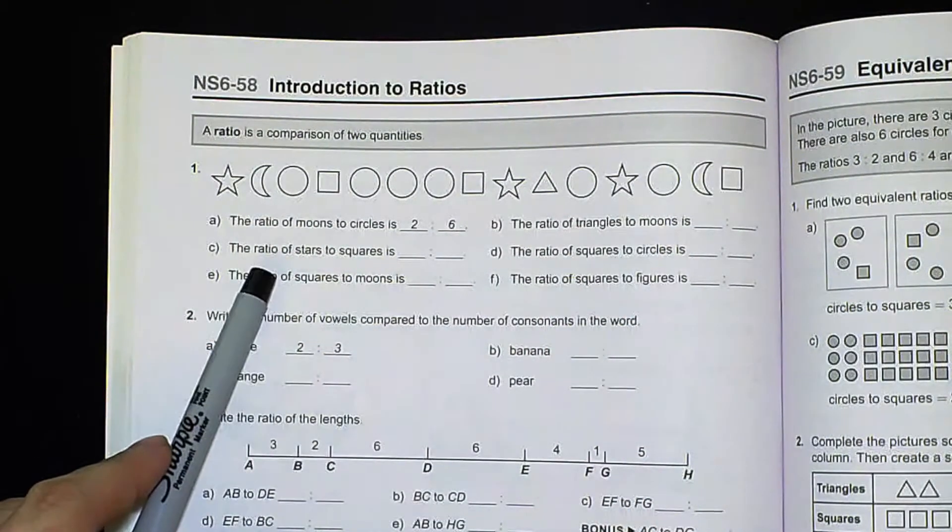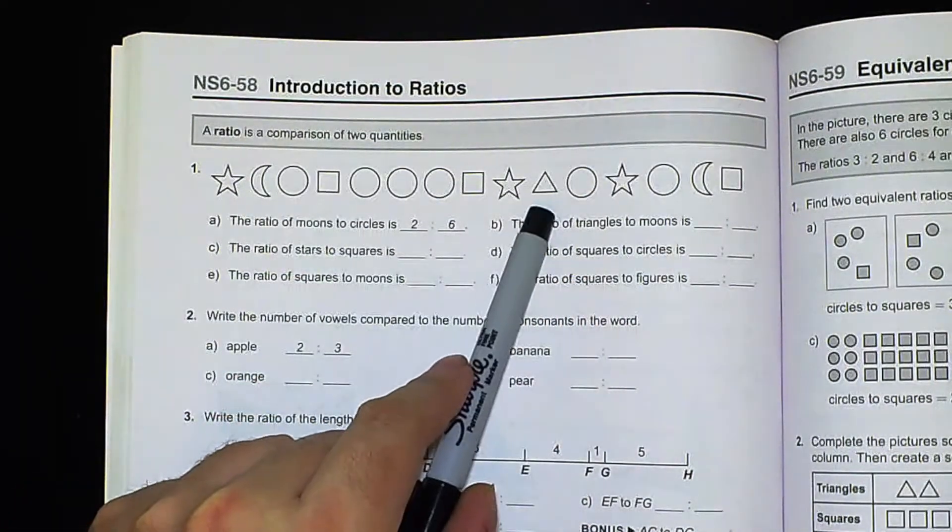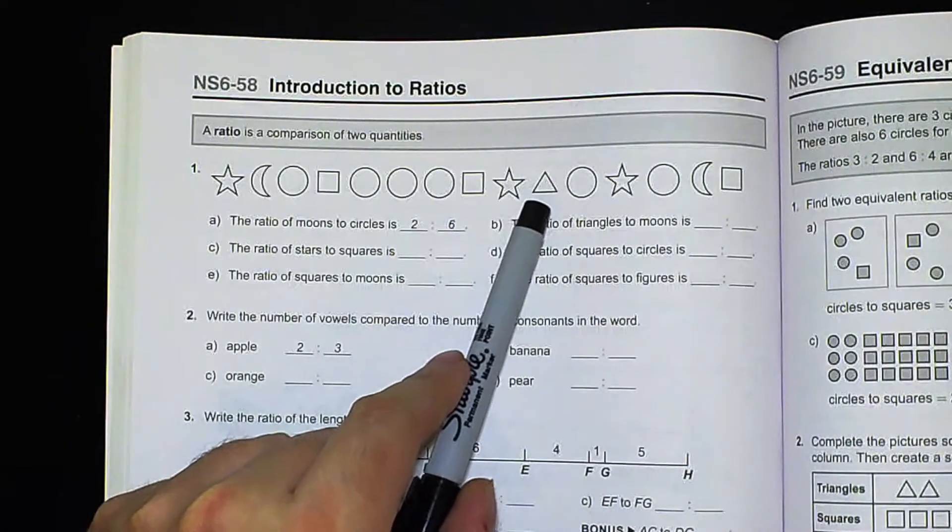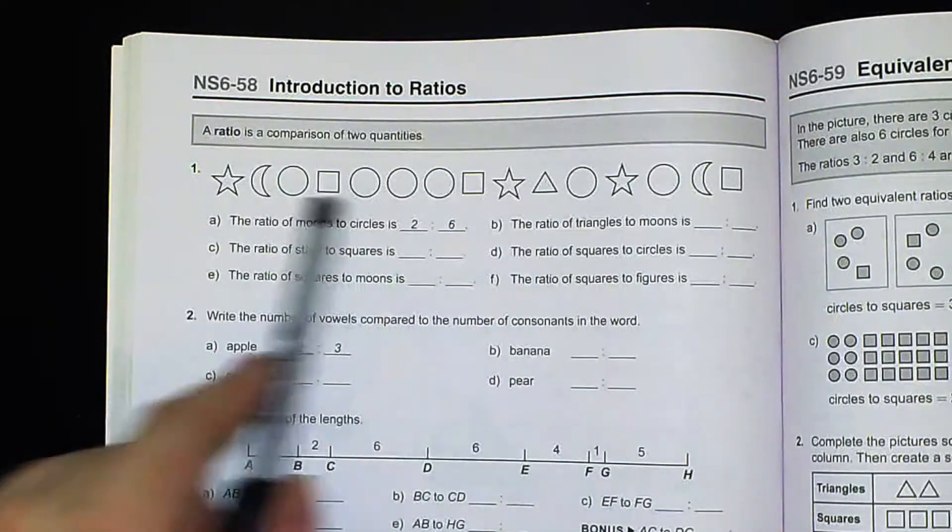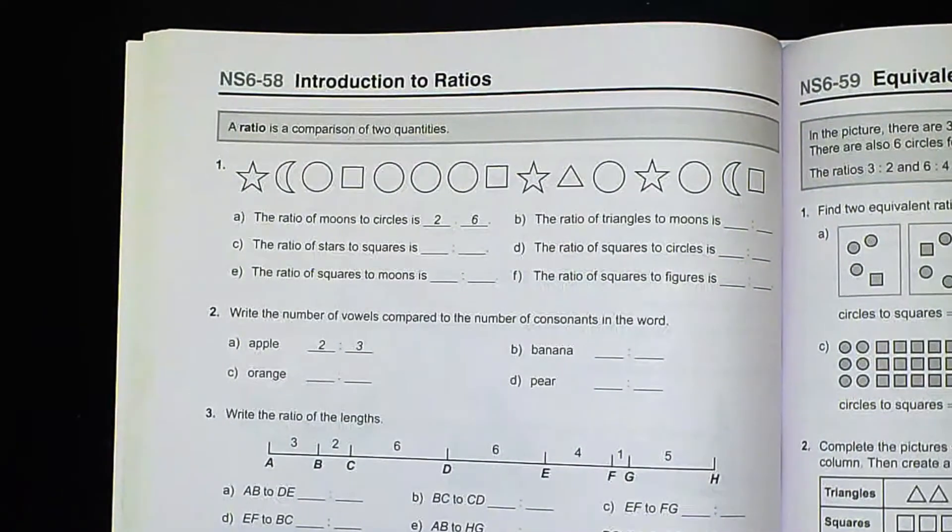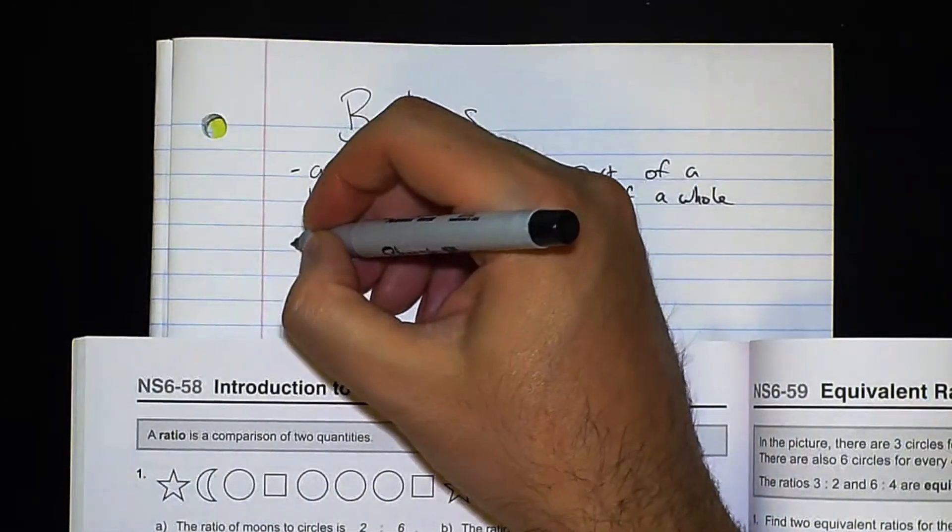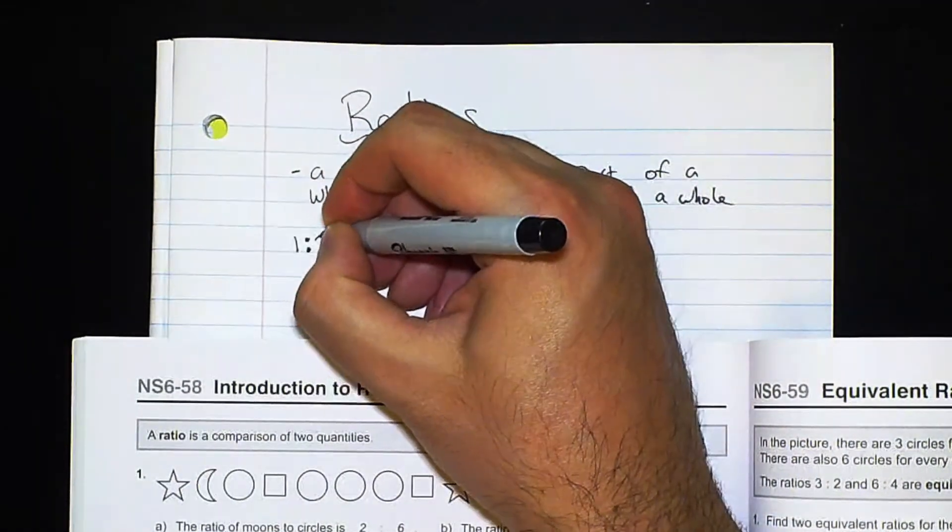So we would do the same thing for the next one triangles to moons. So triangles we see that there is only one triangle and we know that there are two moons so there would be one to two. So we would write that ratio like this, one to two.